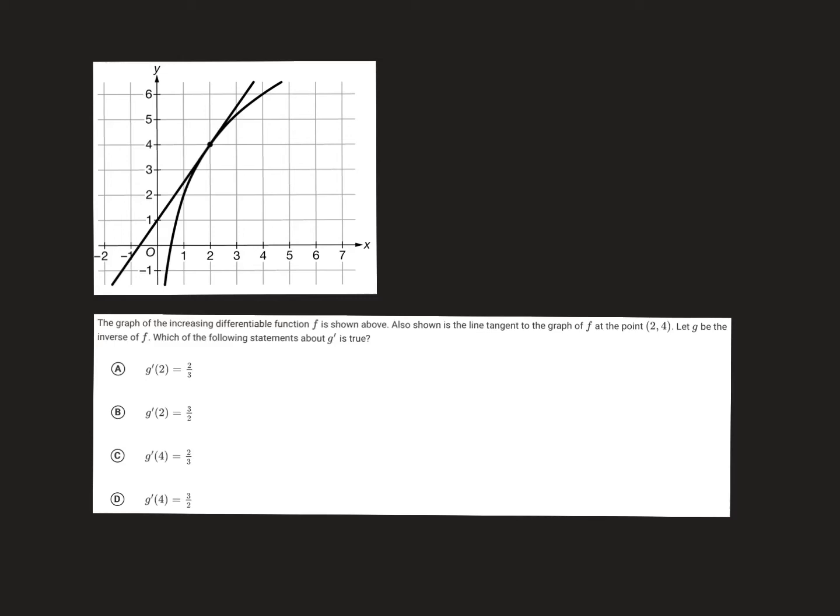All right, so this is AP Classroom, Unit 3, Problem Number 7. You're given a graph, and you're asked to find the derivative of g, so g prime, and they tell you that g is the inverse of f. So I'm going to write g is f inverse of x.